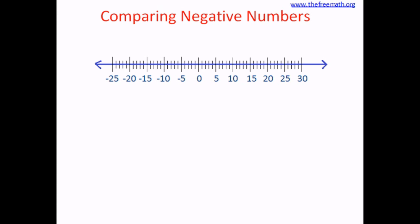Let's start with a pair of positive numbers: 5 and 10. We know that 5 is smaller than 10. If you are ever confused with the less than or greater than sign, look at it as a triangular shape — the side where only one corner points is the smaller number, and the side where two corners point is the bigger number.